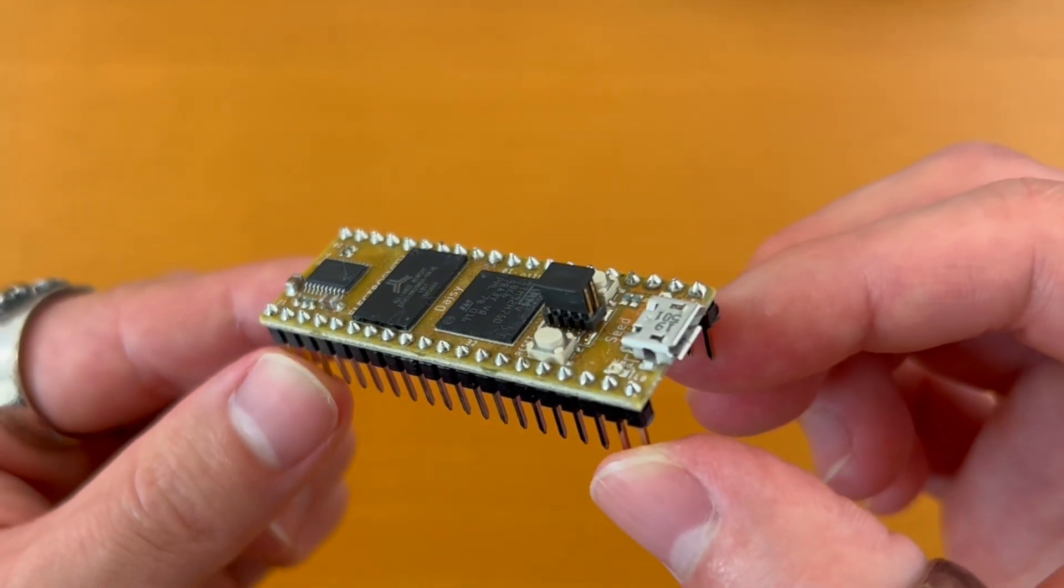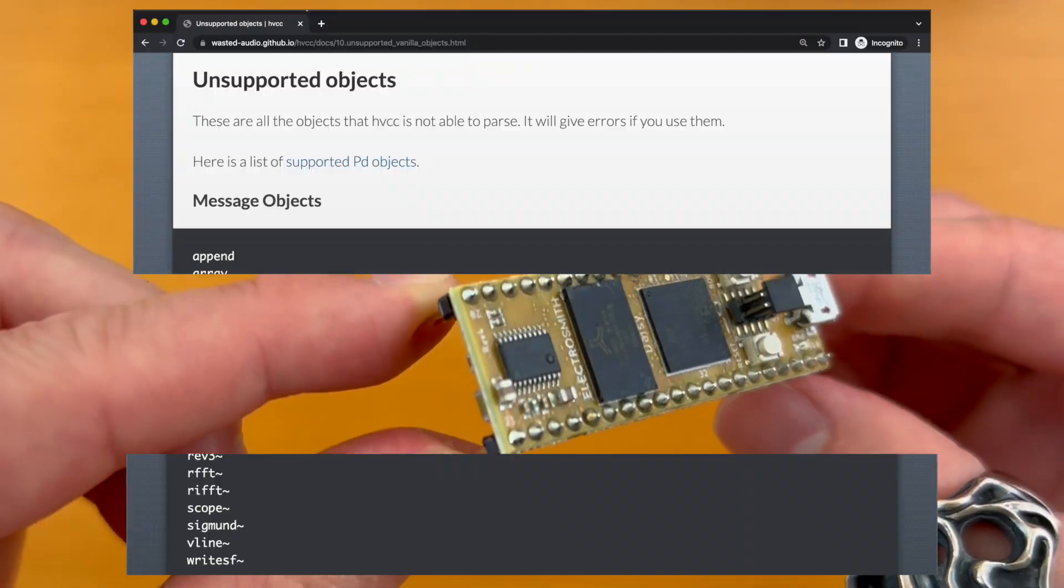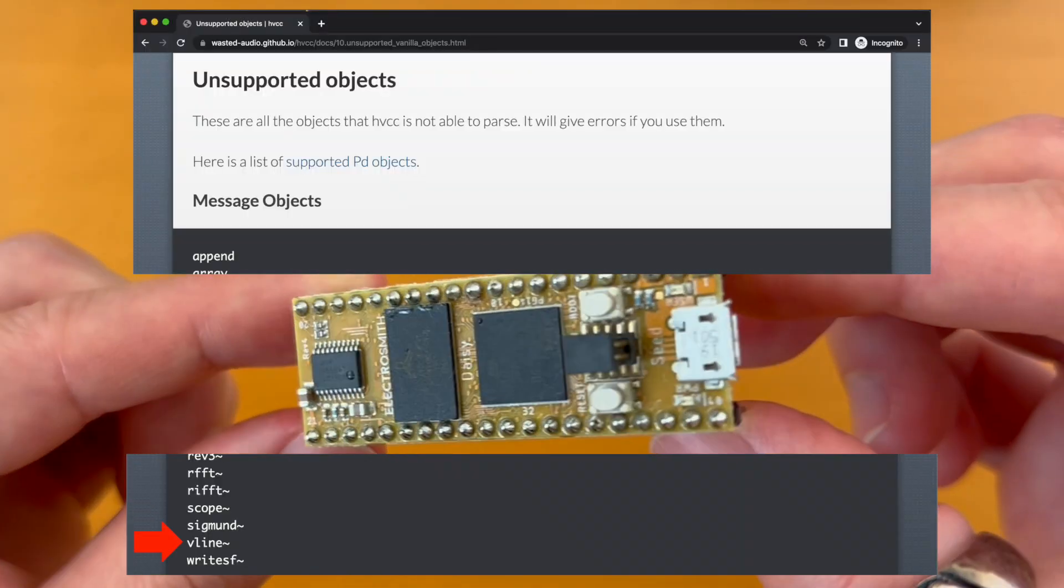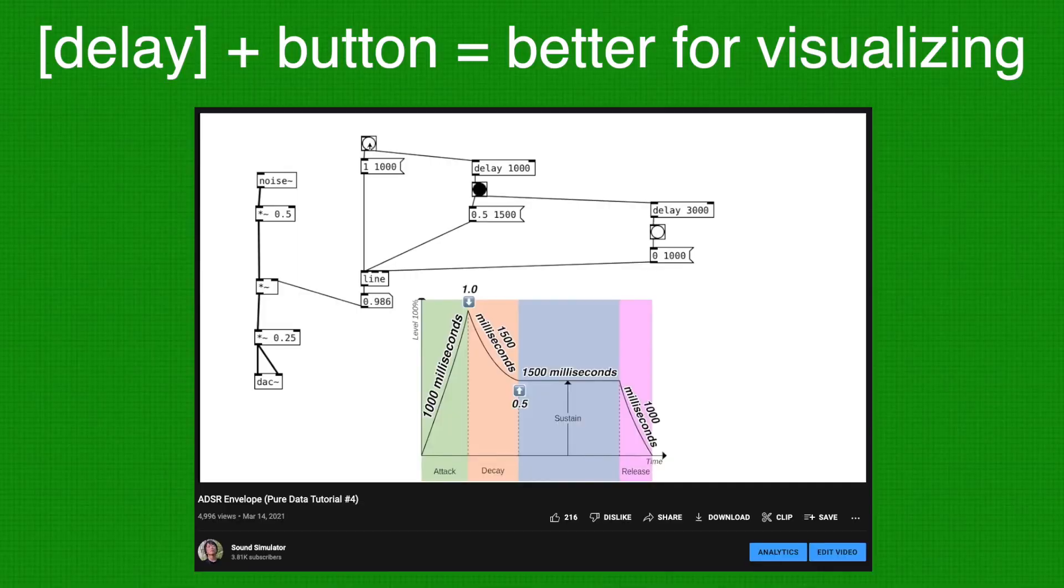When using embedded audio platforms like DAISY, vline tilde is not supported. And I think using delay objects with buttons is probably better for tutorials anyway.